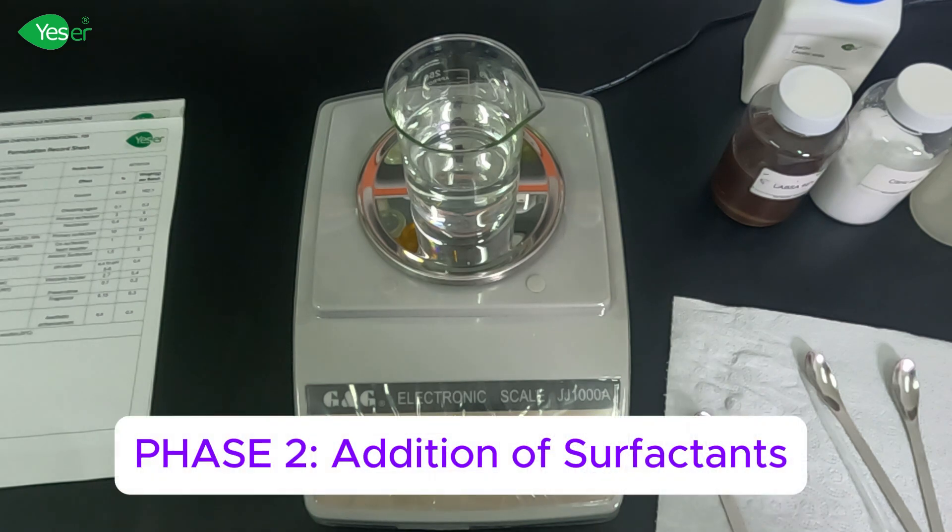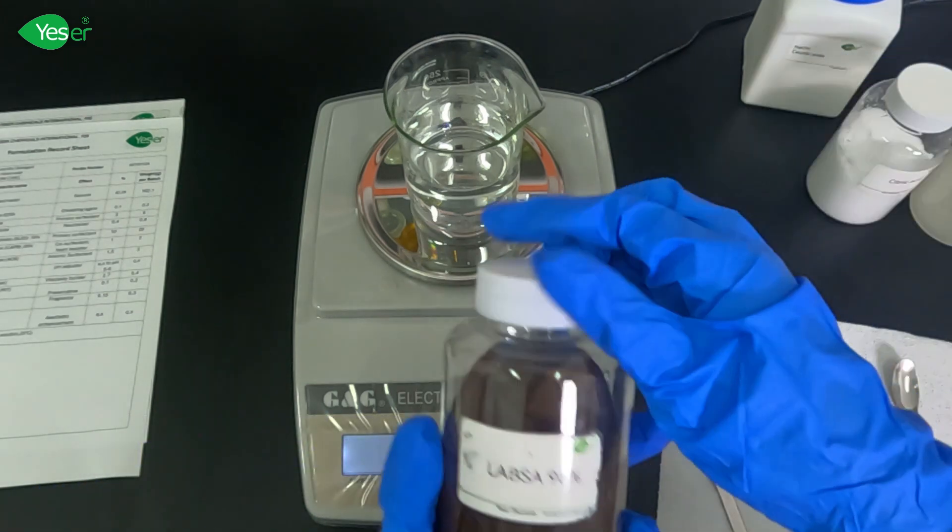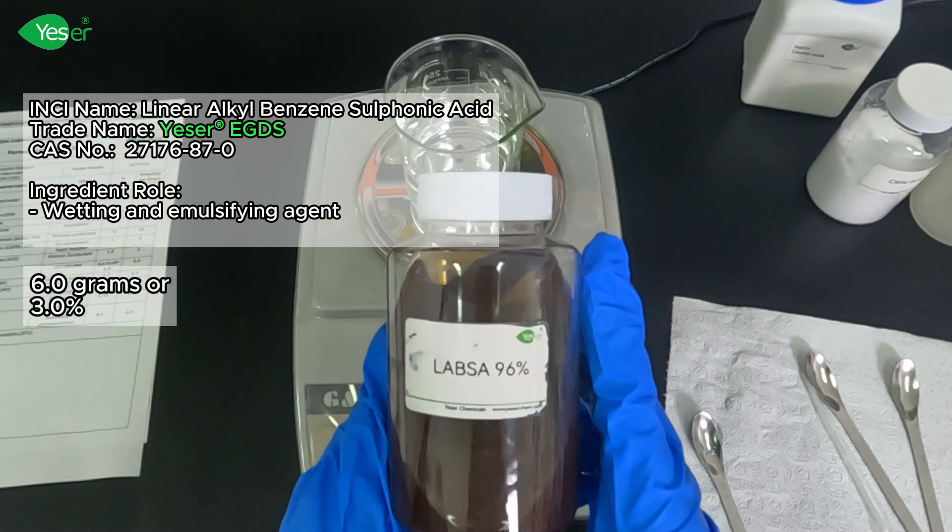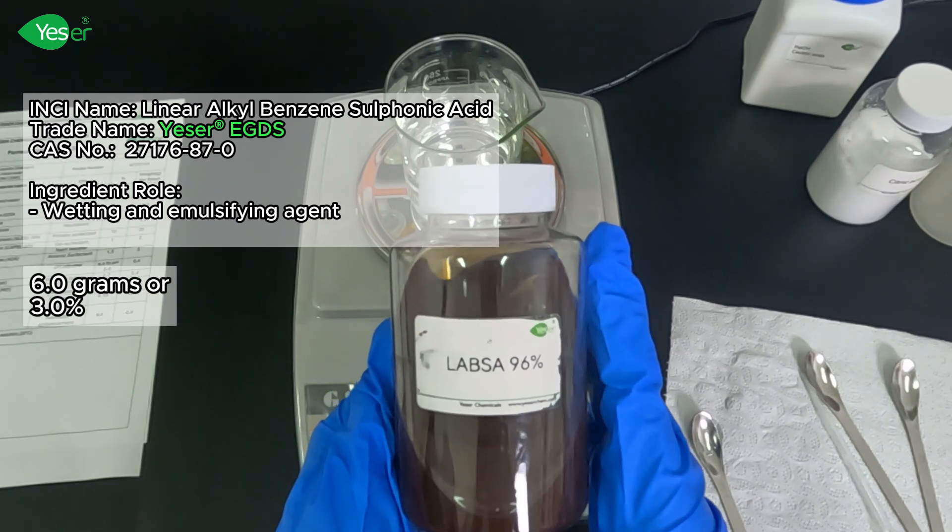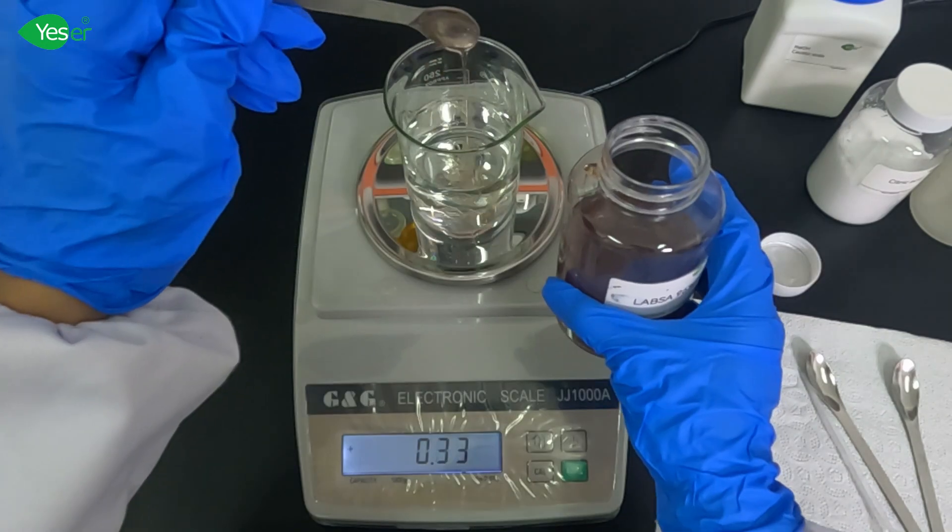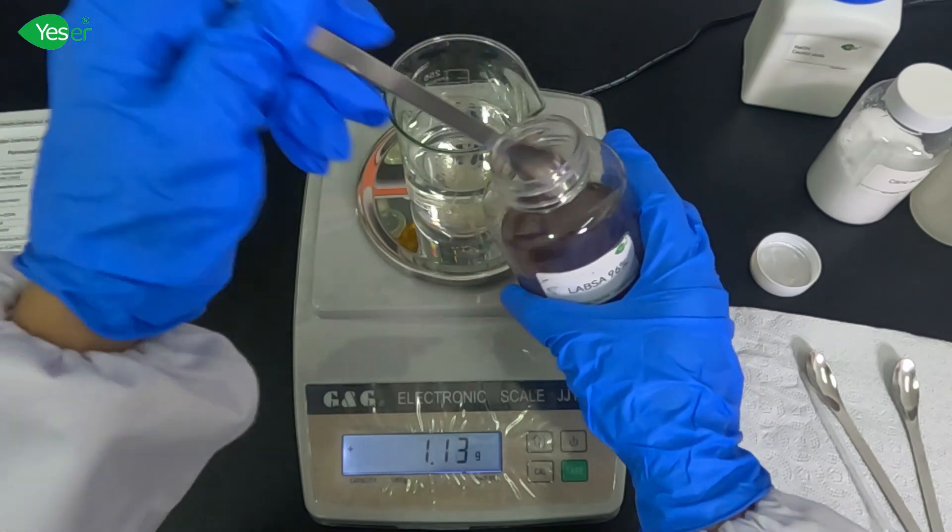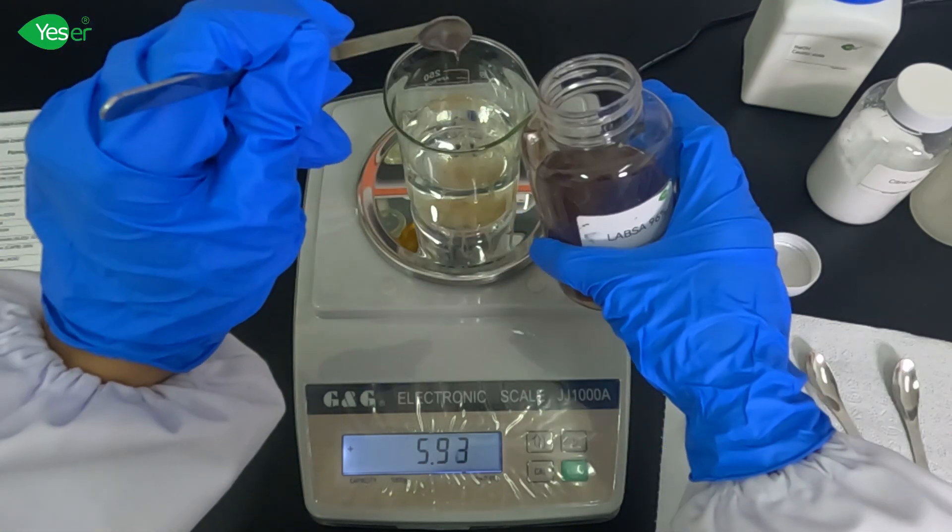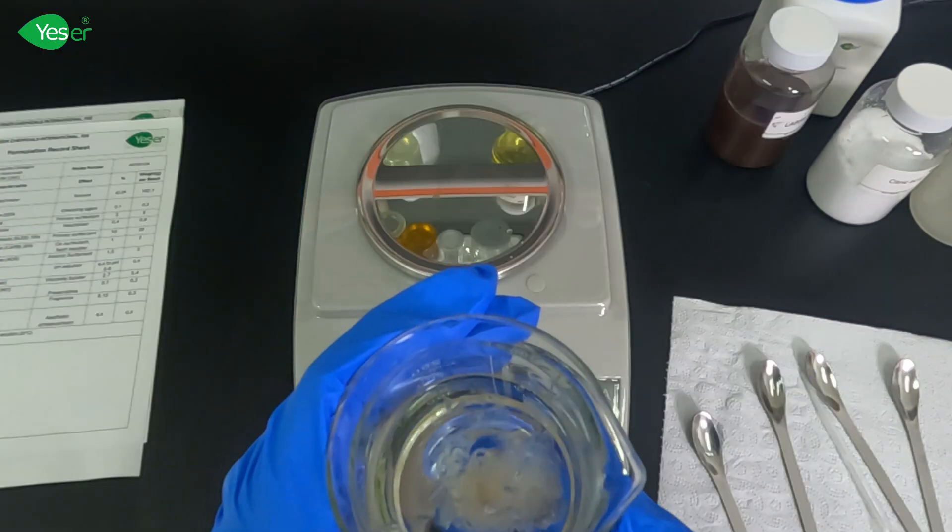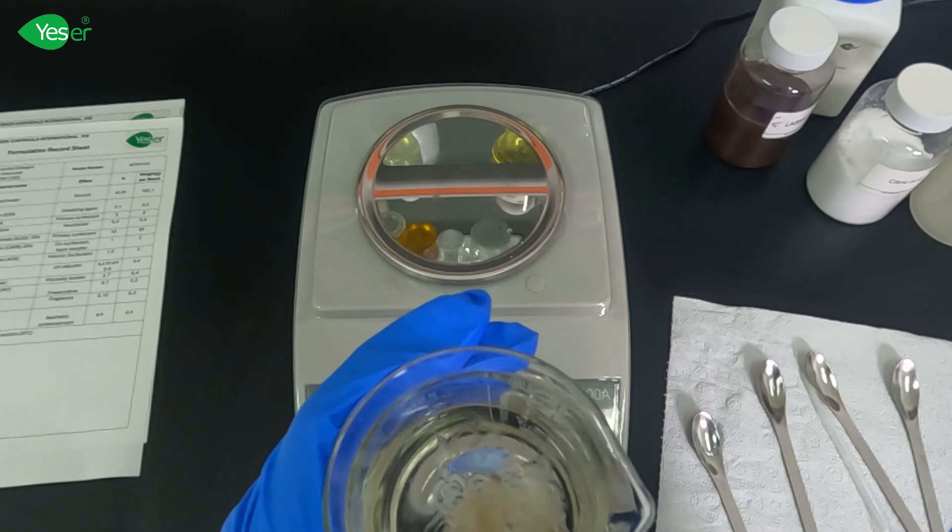Now that we are done with the aqueous phase, we will now proceed to our addition of surfactants. We will add LABSA 96%, weigh 6 grams of this or 3% for the formula. LABSA is an economical primary surfactant. This is highly effective at removing oily stains and dirt, providing great cleaning power at a low cost.